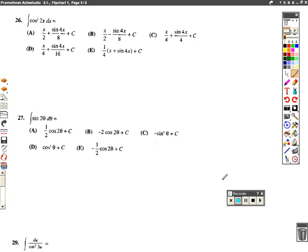All right, number 26, integral of cosine squared of 2x. By now, if you watch the other videos, you should be aware that we're making the substitution that if we see cosine squared of something.